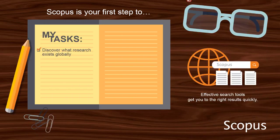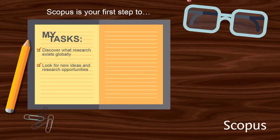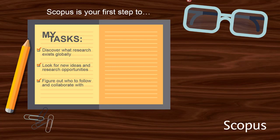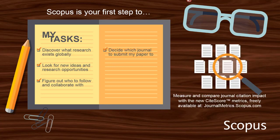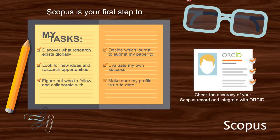Use Scopus to discover what literature exists around the world, to look for new ideas and opportunities by using analytical tools that give you a unique view into the data. Find collaborators using the author and article level metrics. Select a journal to submit to using the journal citation impact metrics. Measure your own article's research impact and manage your author profile.